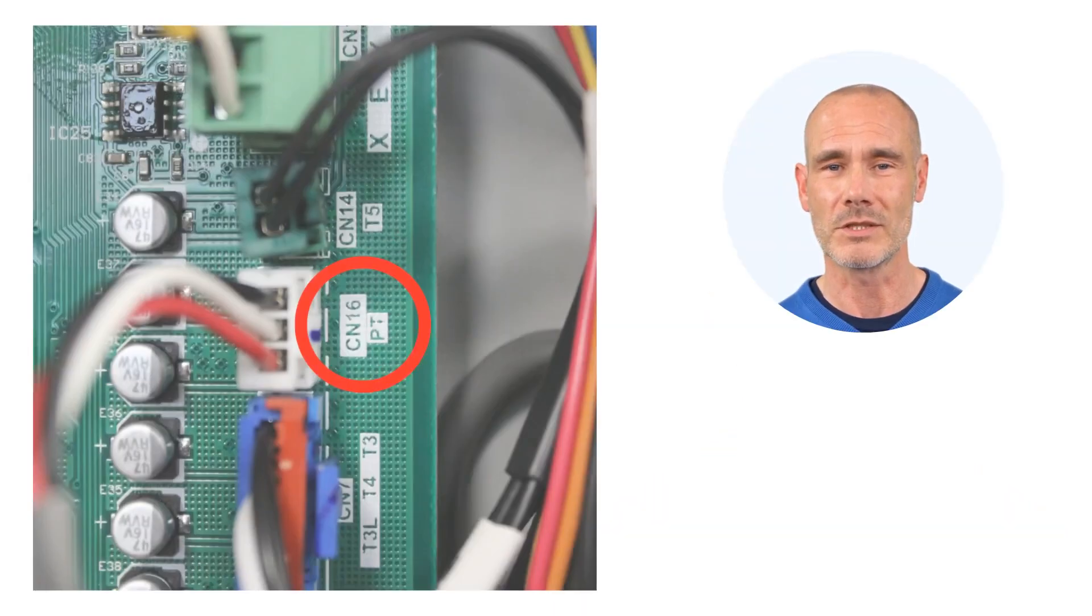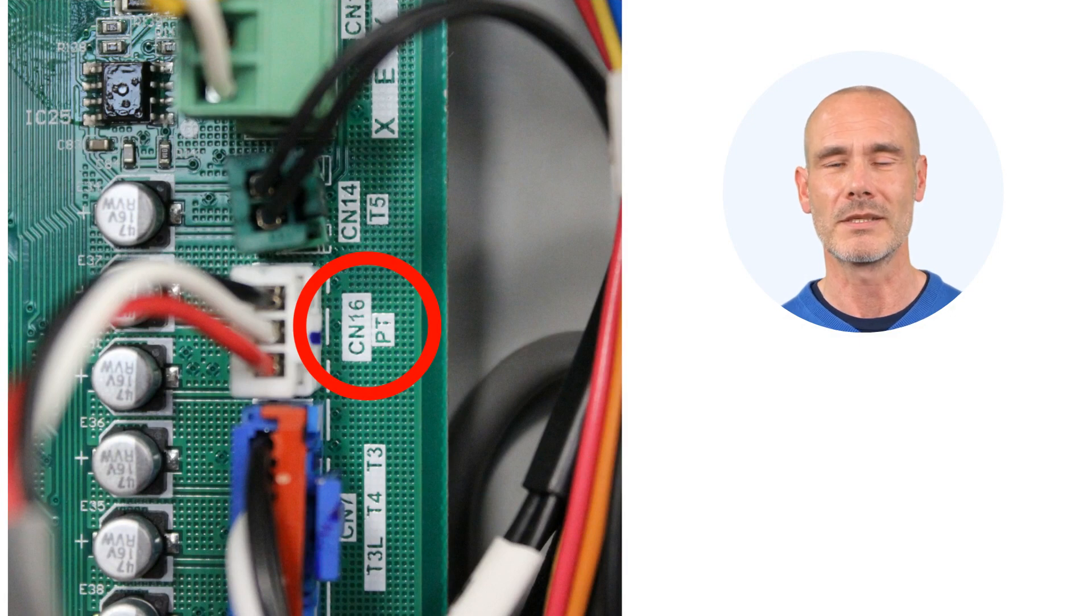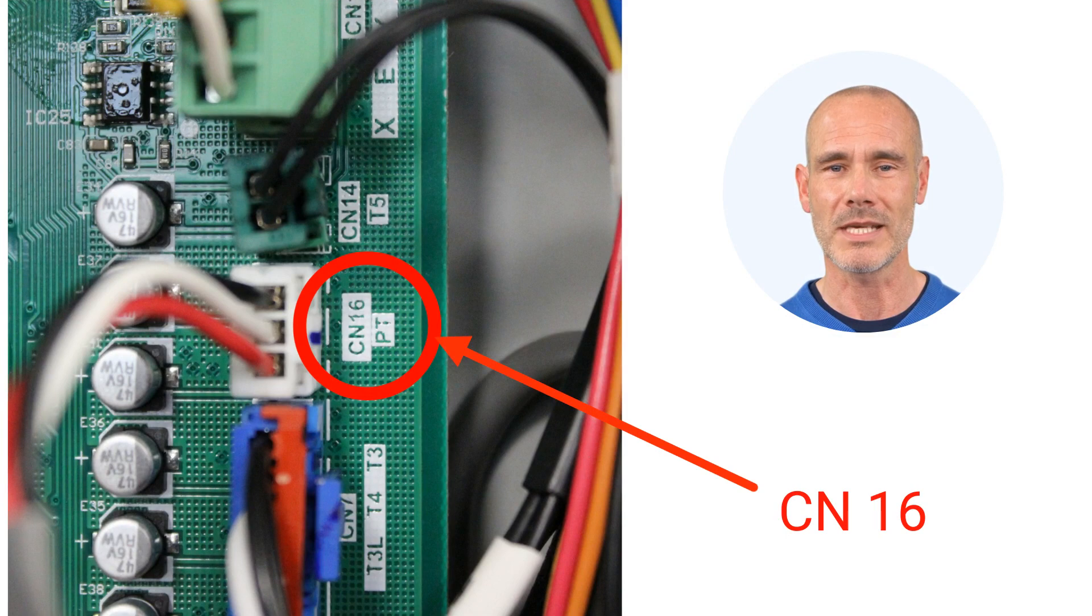To test the transducer, you will need to locate where it plugs into the control board. This terminal on the right side of the board is labeled CN16 and has black, white, and red wires in a white plug.